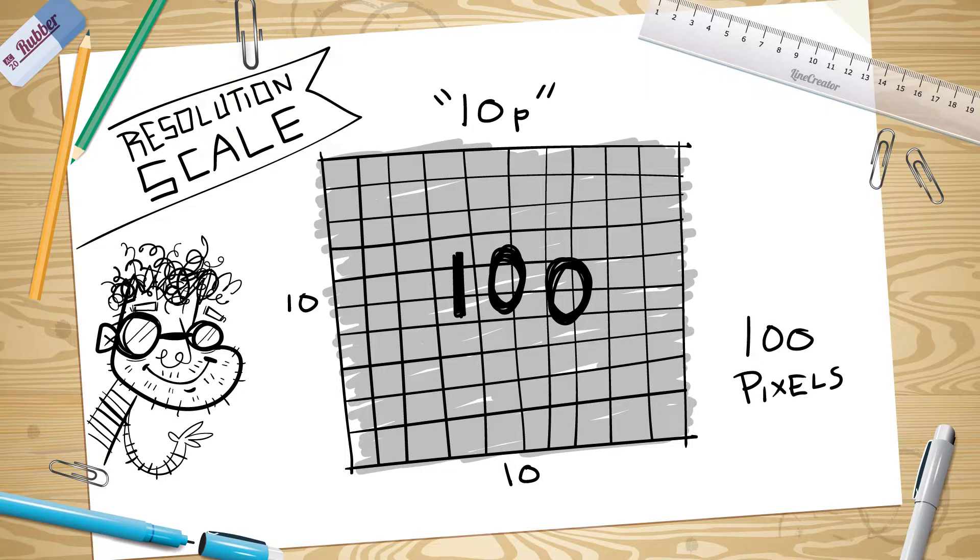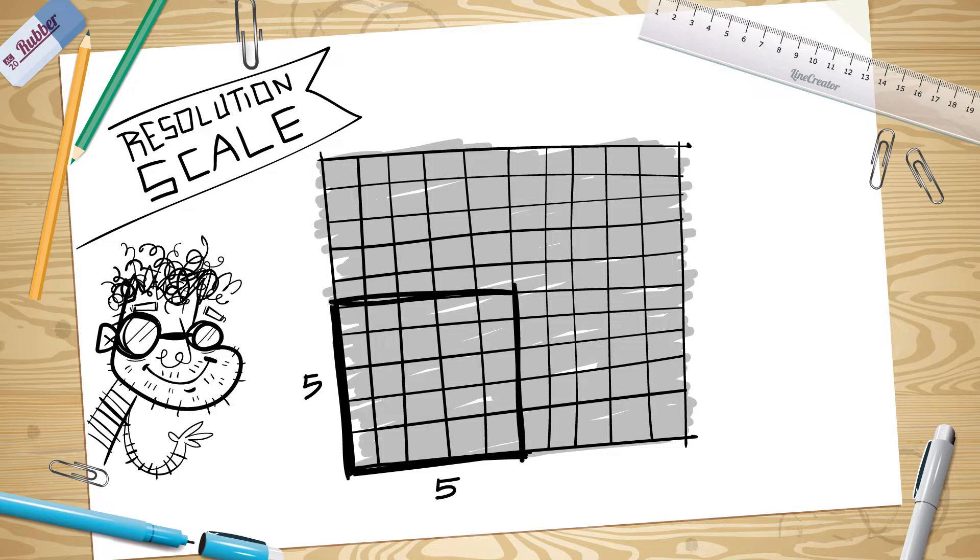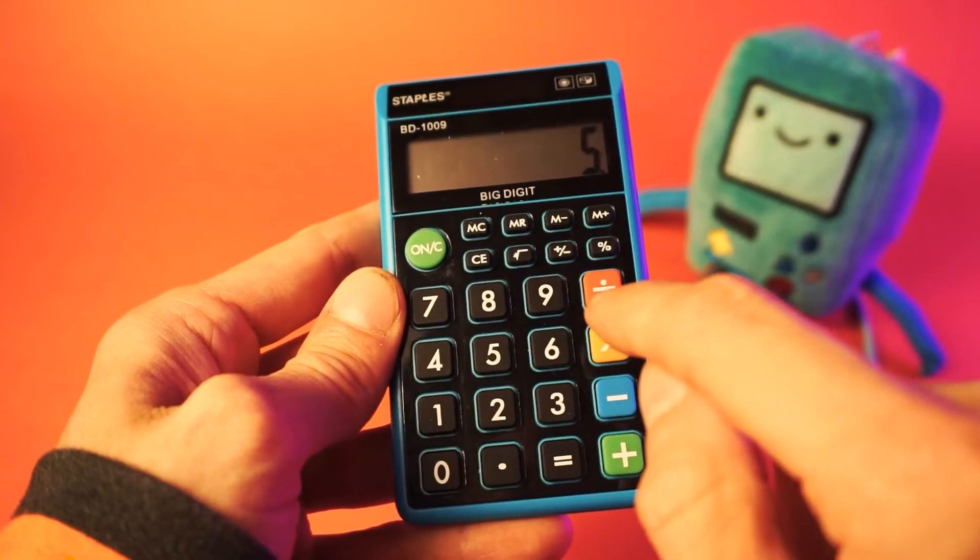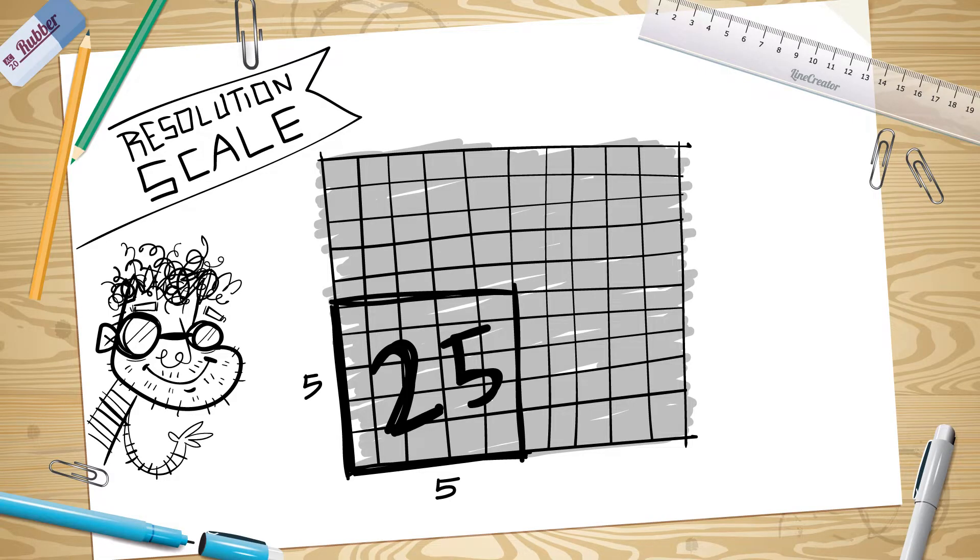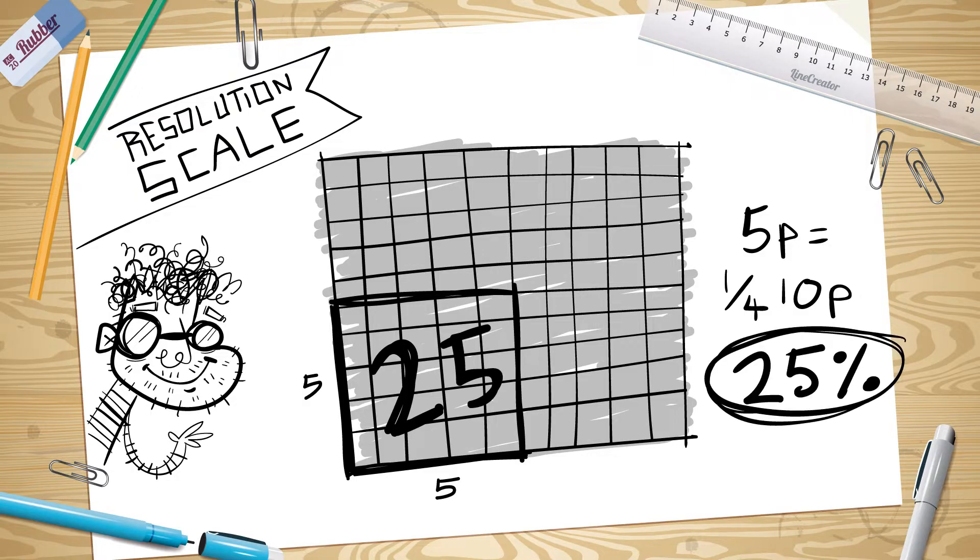Now, let's do a resolution scale on our grid. Shall we say 50%? Yeah, that sounds good. We want a 50% resolution scale, which means we only want 50% of the pixels. So, since 50% of 10 is 5, does that mean that 50% of 10p is 5p? Oh, let's find out. 5p would be a 5 by 5 grid, which has... Hang on a second. 25 pixels. Oh, wait a second. That's only one quarter of the original 100 pixels in the 10p grid. It's not 50%, it's only 25%. What voodoo is this?